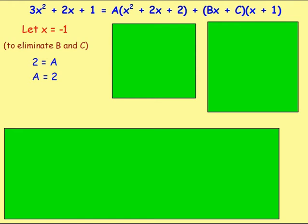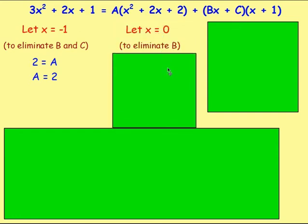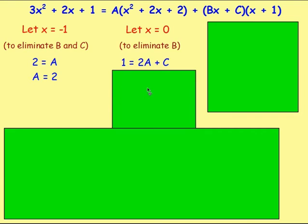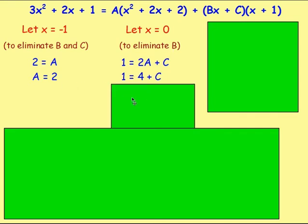We need to find another value of x. Let x = 0, which will eliminate b. Replace x with 0: the left side gives 3(0)² + 2(0) + 1 = 1. On the right, we'd have 2a, and 0 × b cancels out, leaving 1 × c. So 1 = 2a + c. We know a = 2, so substituting gives 1 = 4 + c, therefore c = −3. After that, there's no other value of x that eliminates anything, so just pick a simple value of x, sub in the values of a and c, and that will allow us to find b.